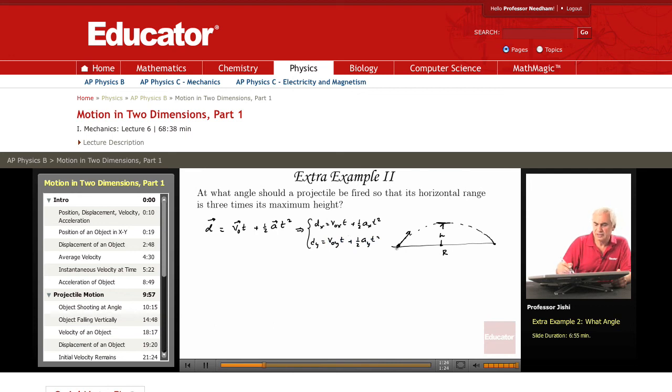Now DX, the displacement in the X direction, is just the range. So the range is V0X. If this is V0, this is theta, then V0X is V0 cosine theta. So it's V0 cosine theta times T, and AX is 0.